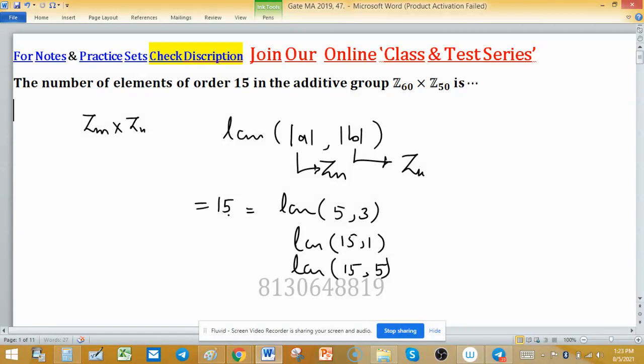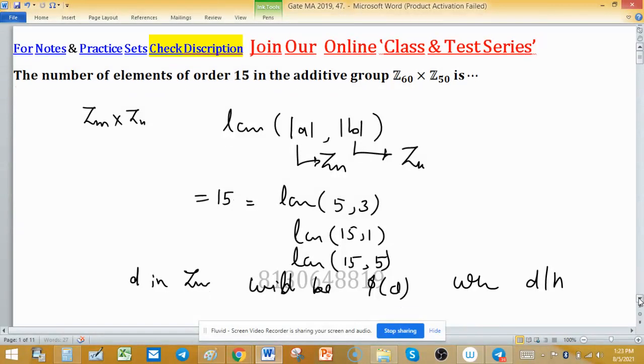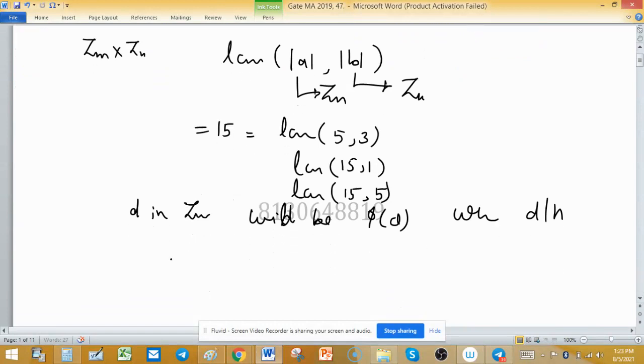Now use the result: the number of elements of order D in Z_N will be φ(D) when D divides N. Otherwise we can't use this formula. So we have to find cases where 15 is the LCM.